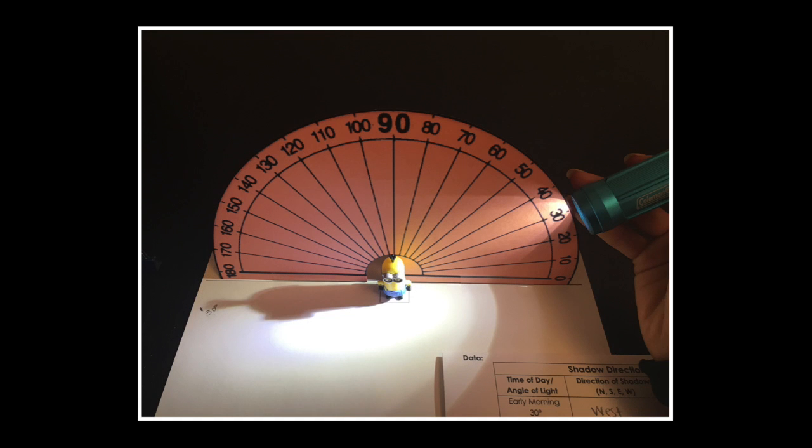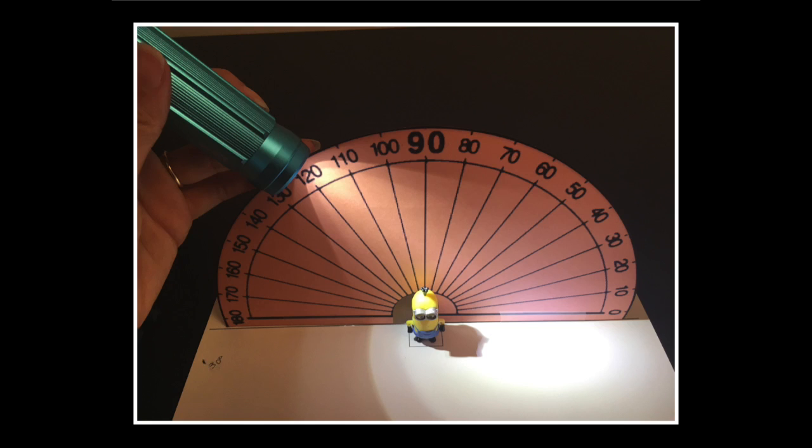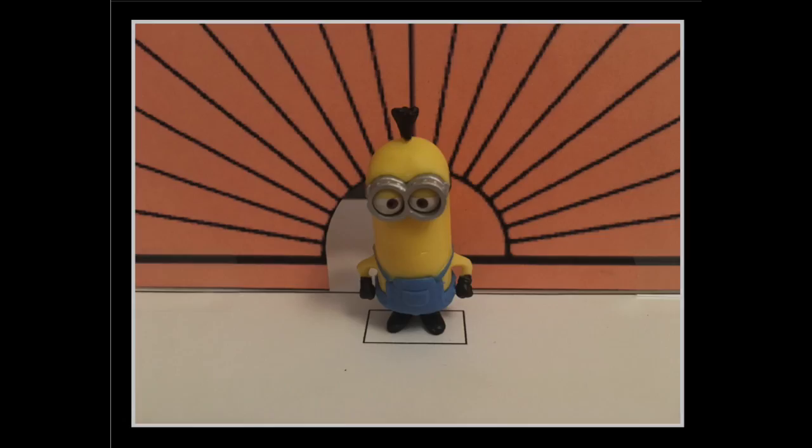We will do this by creating a model to represent the sun during different parts of the day. Students will shine light onto a figurine at different angles which will represent sunrise, mid-morning, noon, afternoon, and sunset. They will observe and record how the shadows change in length and direction and then analyze their results. Let's get started.